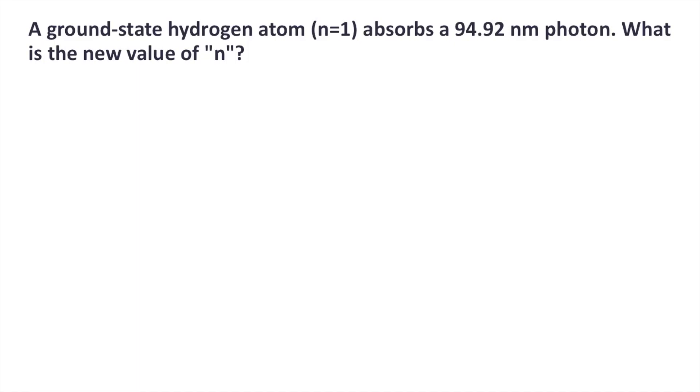A ground state hydrogen atom, n equals 1, absorbs a 94.92 nanometer photon. What is the new value of n?